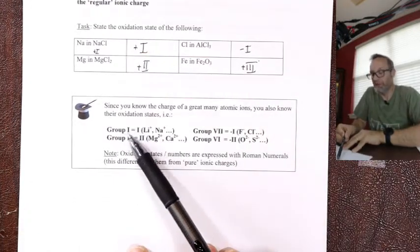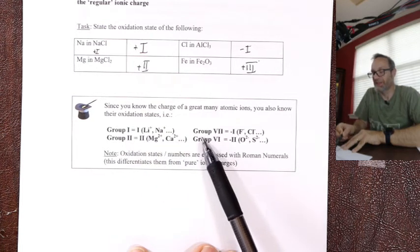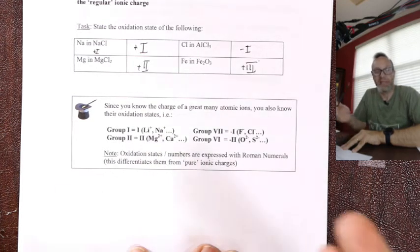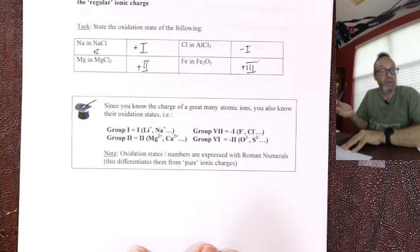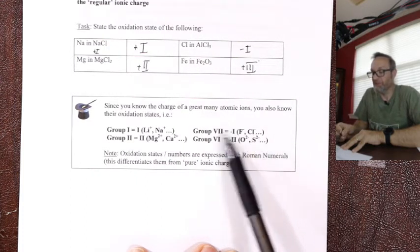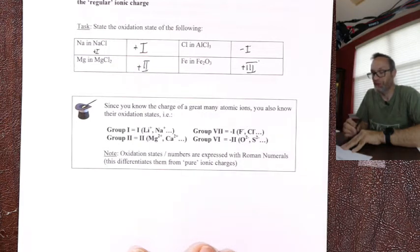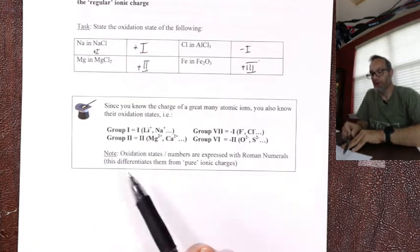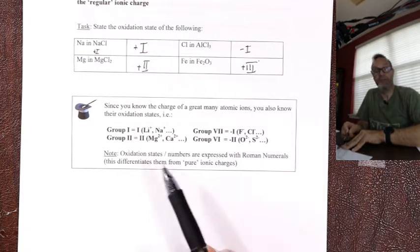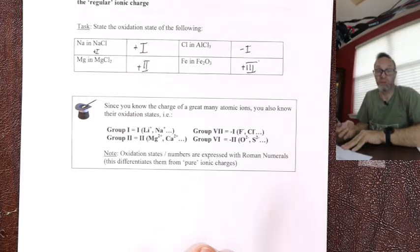For simple metals and atomic minus ions, it's the same as their regular charge. Group one makes plus one — plus one oxidation state. Group two makes plus two — plus two oxidation state. This is why we label those columns with Roman numerals: it's really labeling the oxidation state. Group seven makes minus one. Group six makes minus two. Oxidation states are always expressed in Roman numerals.